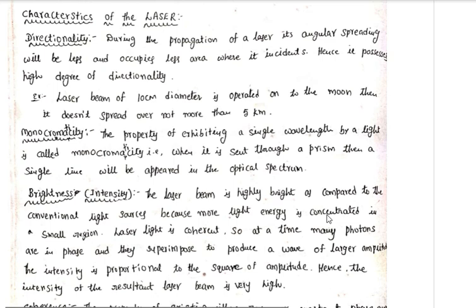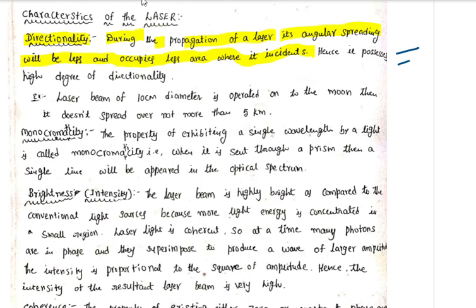The first characteristic is Directionality. During the propagation of a laser, its angular spreading will be less and it occupies less area where it is incident. This is related to propagation and angular spreading.